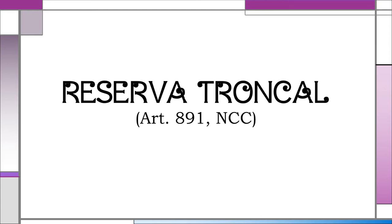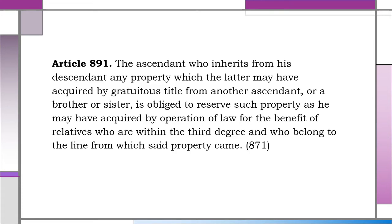Reserva Troncal, Article 891, New Civil Code. Article 891: The ascendant who inherits from his descendant any property which the latter may have acquired by gratuitous title from another ascendant or a brother or sister is obliged to reserve such property as he may have acquired by operation of law for the benefit of relatives who are within the third degree and who belong to the line from which said property came.